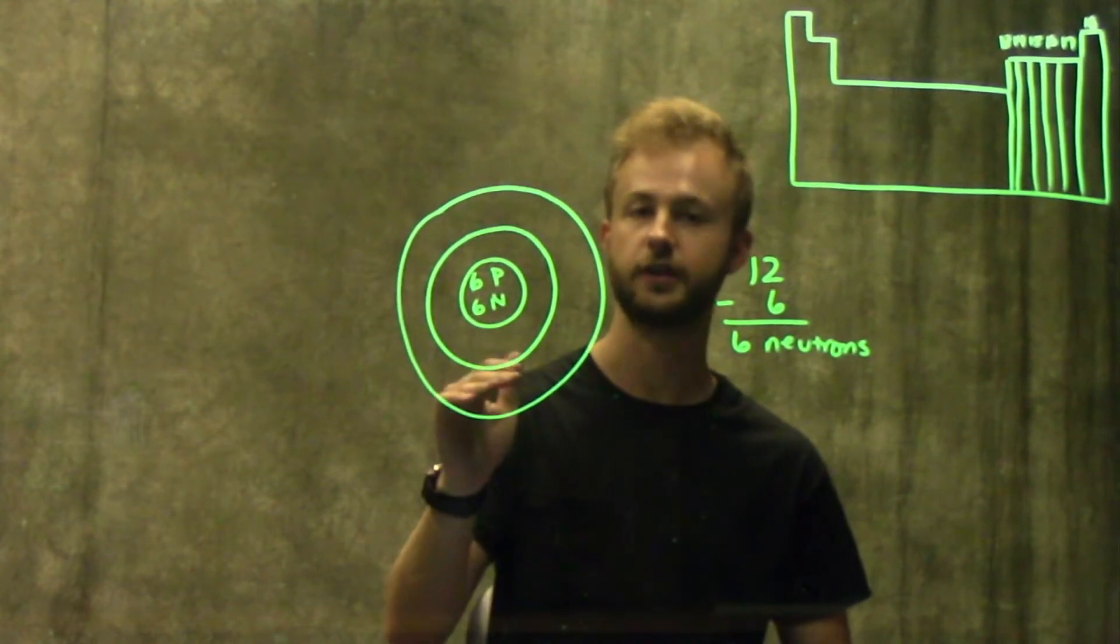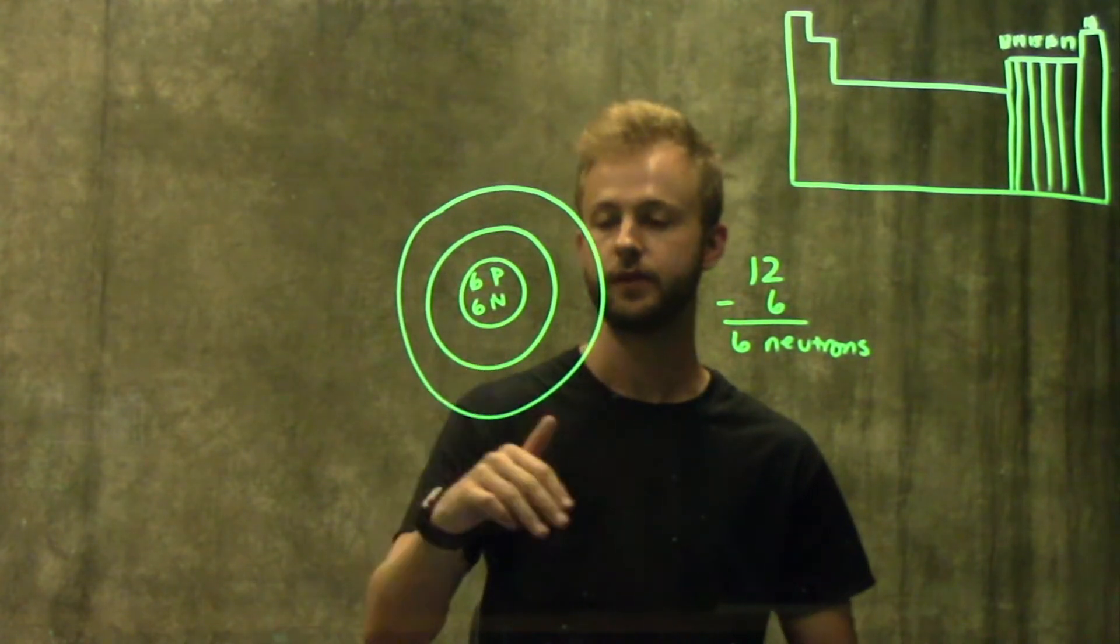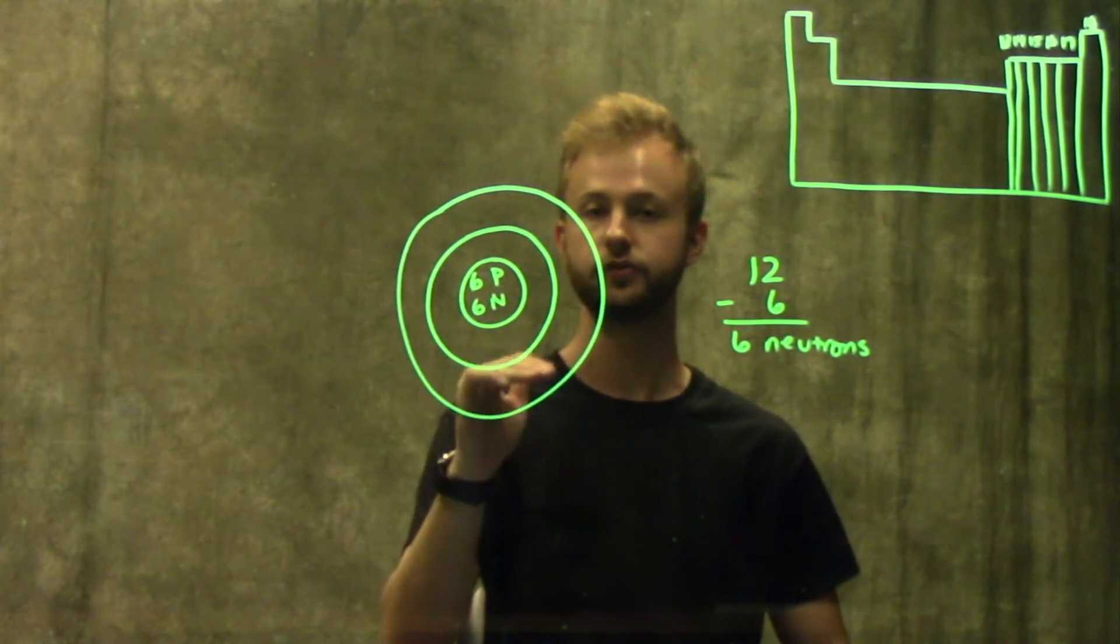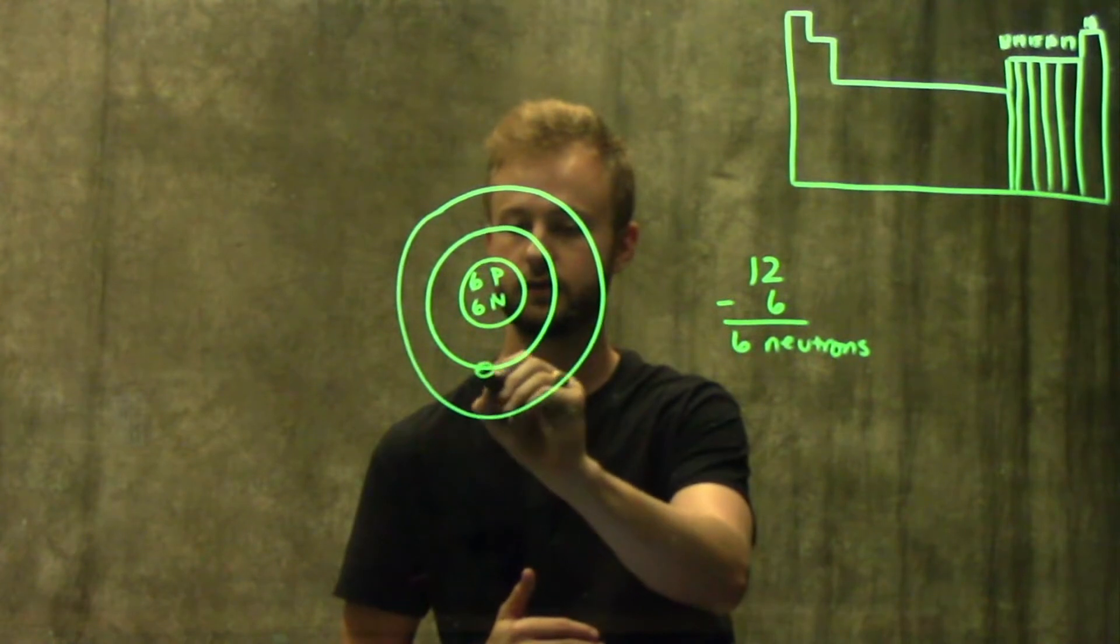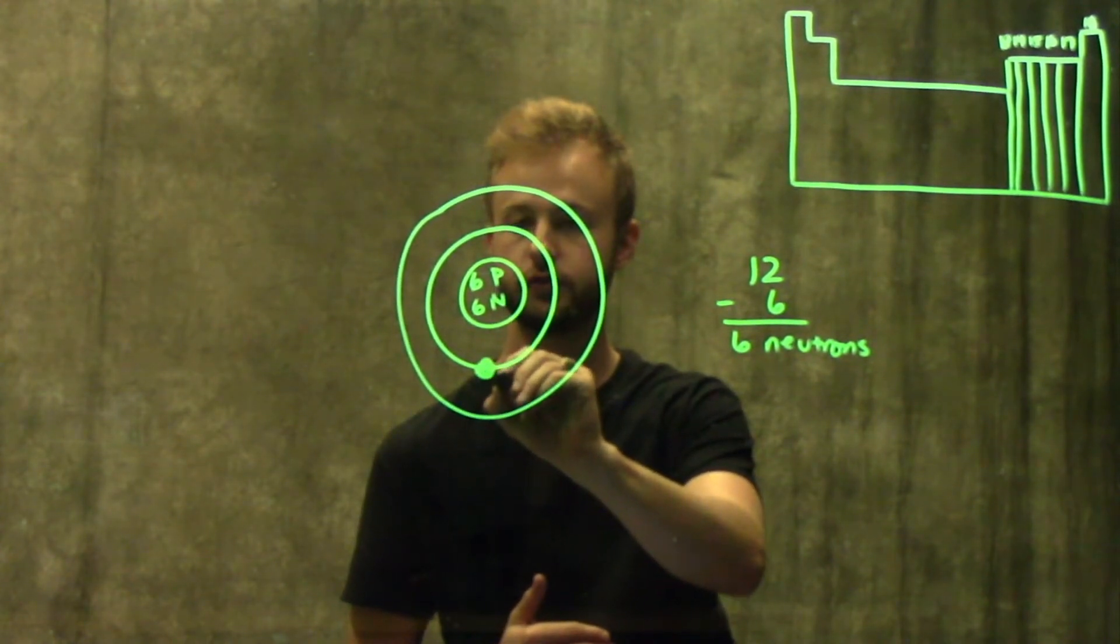So in this first electron shell, we only have one orbital, and that means that this shell can only hold two electrons. Go ahead and draw those in.